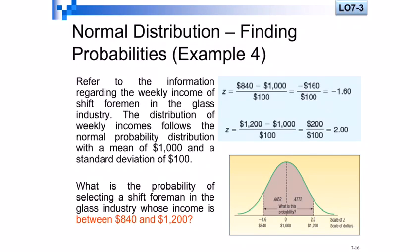They ask, what is the probability of selecting a shift foreman in a glass industry whose income is between $840 and $1,200? The mean is in the middle. We have a negative side and we have a positive side. The distance is between mean, between left and right.